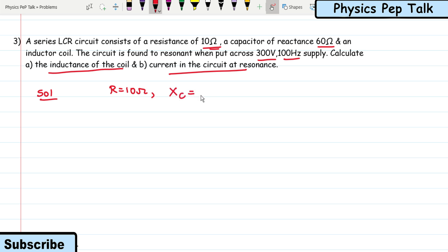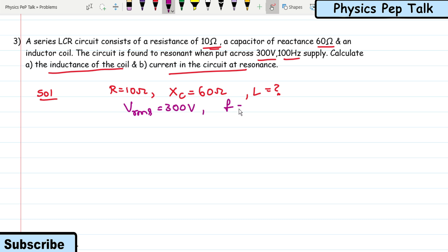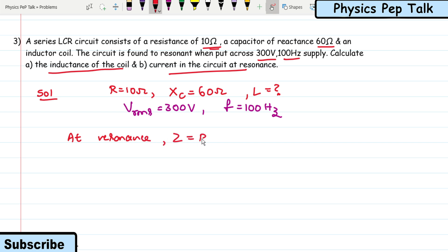Given: R = 10 Ω, X_C = 60 Ω, V_RMS = 300 V, frequency = 100 Hz. At resonance, the impedance Z = R = 10 ohms. Also at resonance, X_L = X_C, meaning the inductive reactance equals the capacitive reactance.